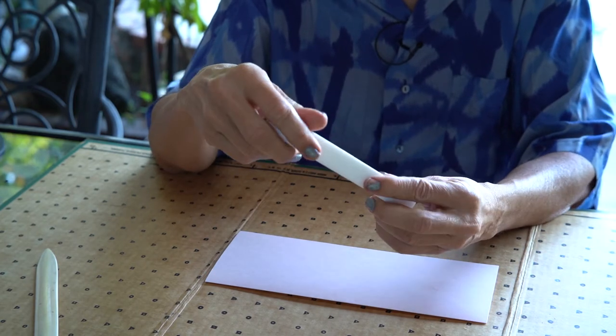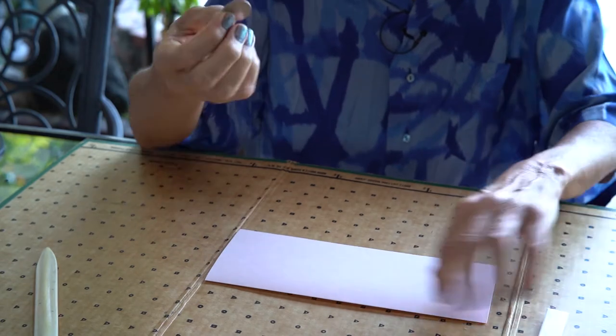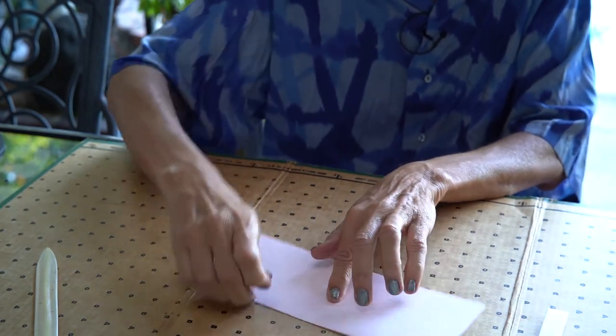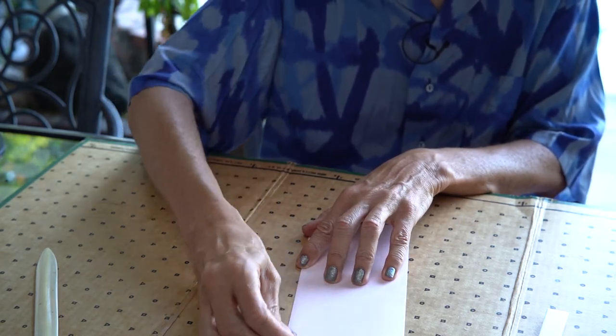Or you could also use a spoon or a quarter or anything you've got just to go on the edge of that crease and make it nice and crisp and sharp. You get a nicer result that way.